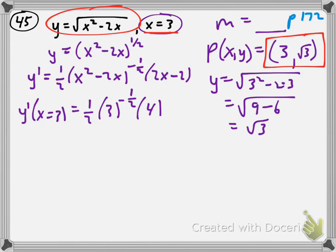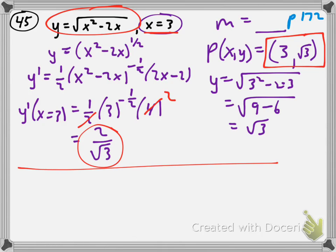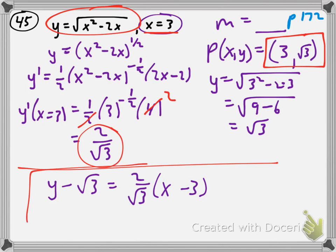y prime at x equals 3 would be 1/2 times (9 minus 6) to the negative 1/2 times (6 minus 2) — that gives us 2 over radical 3. So there's our slope. We have y minus y₁ equals slope times (x minus x₁): y minus √3 equals (2/√3) times (x minus 3). And there we go.